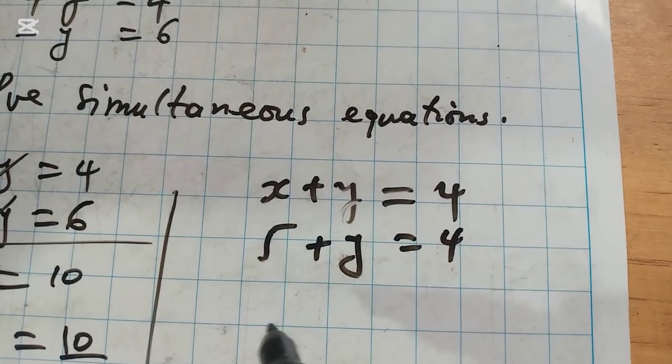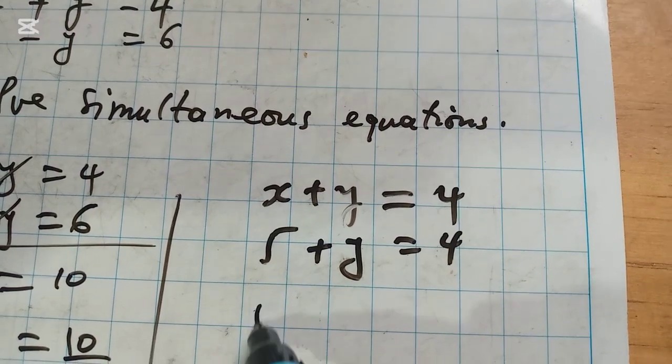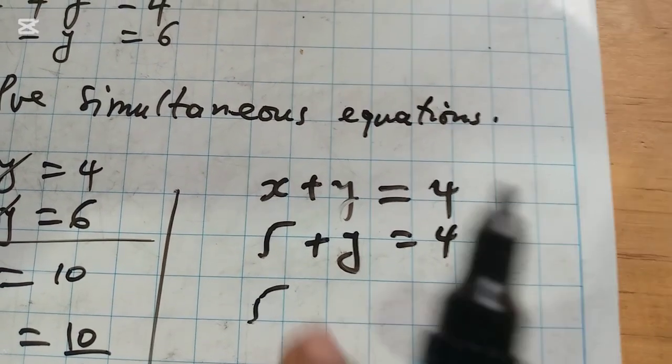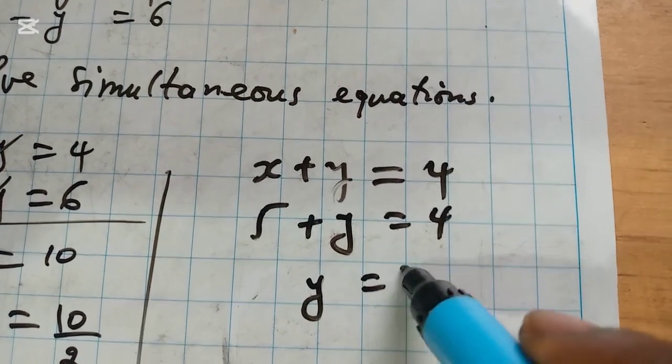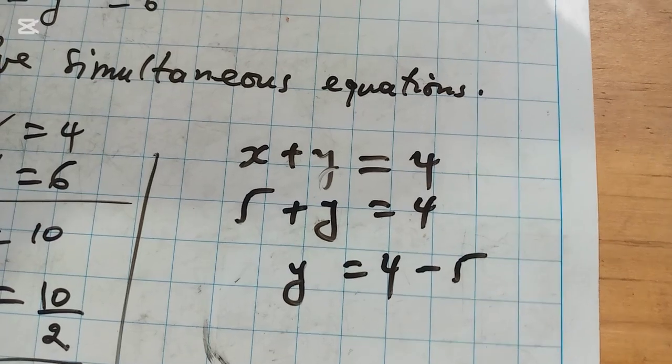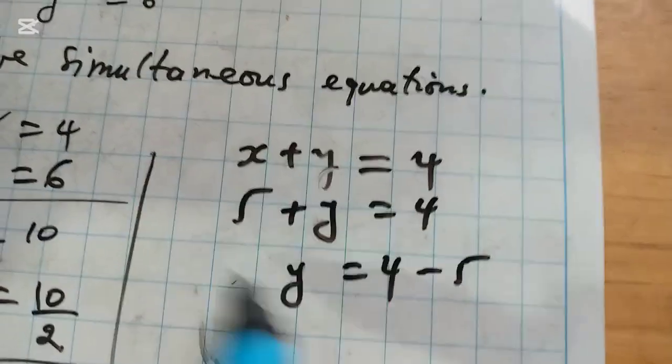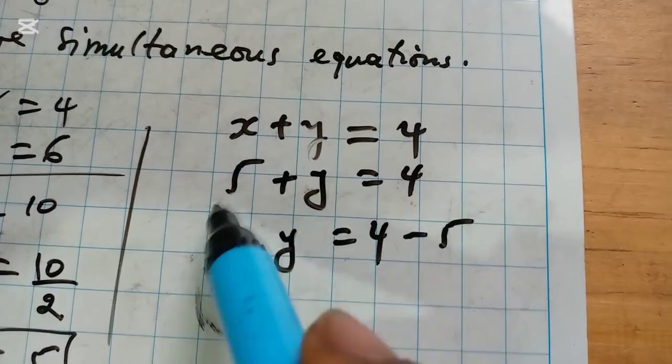Here you have Y equals 4 minus 5. You see how easy it was - we subtract 5 on both sides to remain with zero on the left and negative 5 on the right.